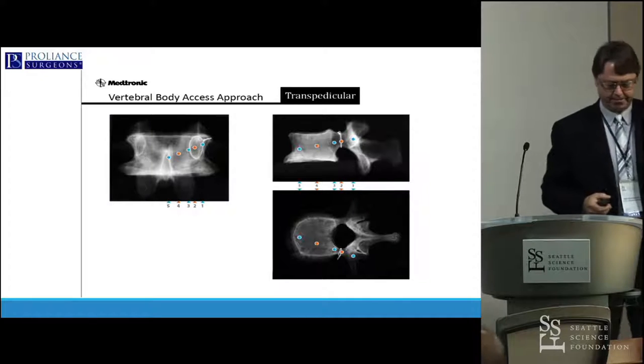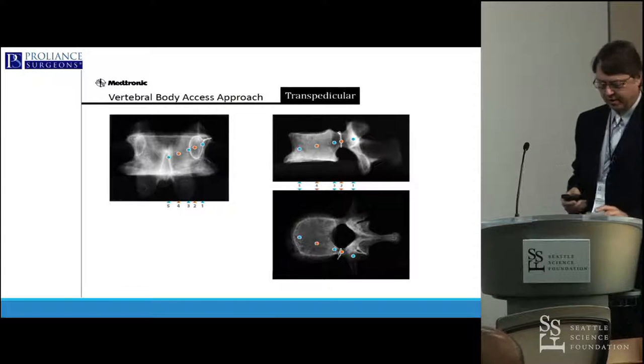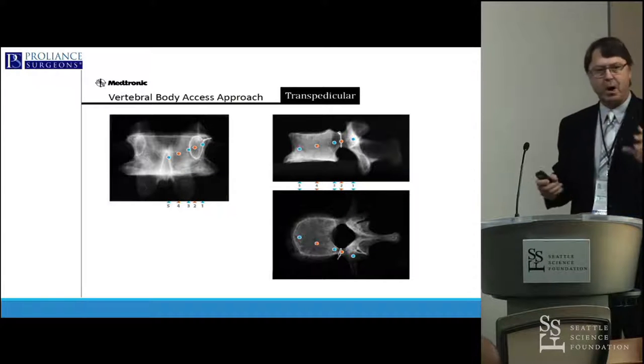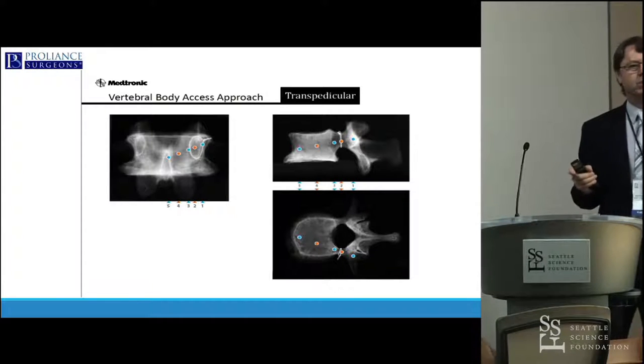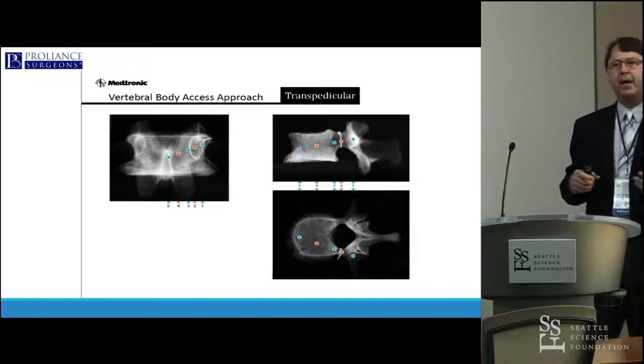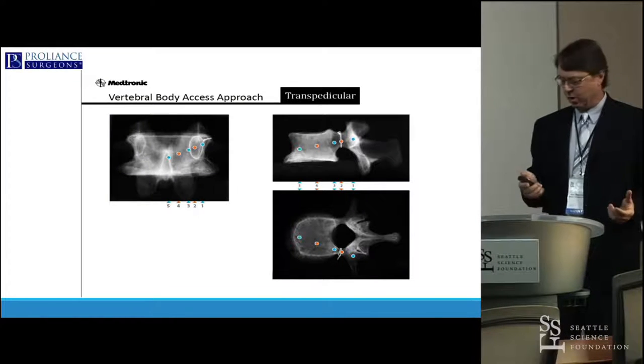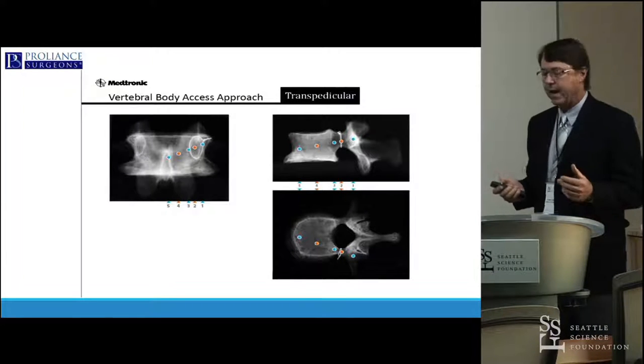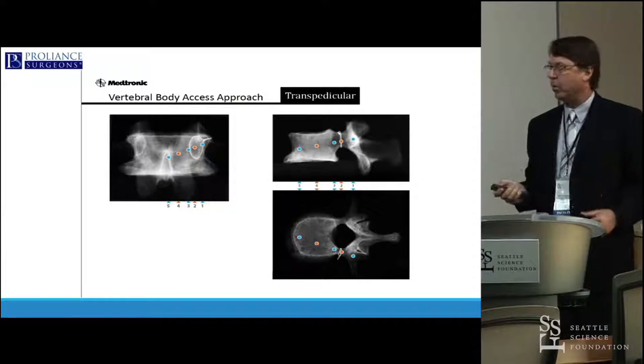The critical anatomy in the spine is three-dimensional anatomy. Learning early how to read three-dimensional anatomy is very important.